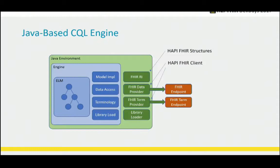Using that as a description of the engine, this is the Java-based engine. We use the HAPI FHIR structures for the data model, the FHIR data provider to get a FHIR endpoint, and the terminology services within FHIR to get a FHIR terminology endpoint. We've got a library loader that uses the library resource to load the actual logic. So now I can post a library to a HAPI FHIR server, post a plan definition, and then evaluate the logic within that plan definition.